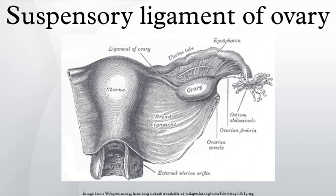The suspensory ligament of the ovary, also called the infundibulopelvic ligament, is a fold of peritoneum that extends out from the ovary to the wall of the pelvis. Some sources consider it a part of the broad ligament of uterus, while other sources consider it a termination of the ligament. It is not considered a true ligament in that it does not physically support any anatomical structures. However, it is an important landmark and it houses the ovarian vessels. The suspensory ligament is directed upward over the iliac vessels.